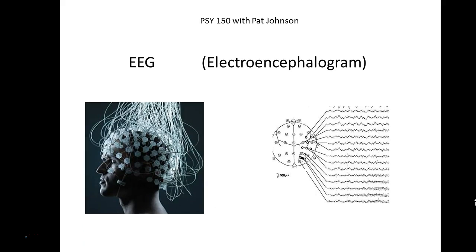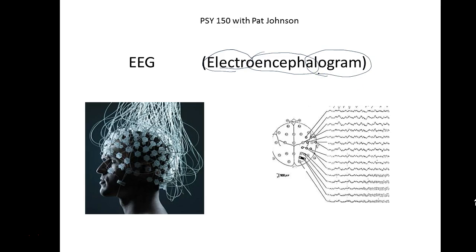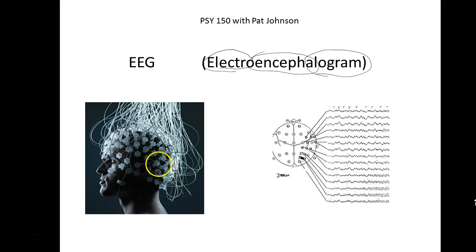The EEG stands for electroencephalogram. Electro, meaning electricity; encepha, meaning the brain; and logram, meaning a picture. So in an electroencephalogram, the person has little electrodes placed all over their brain, and they're attached with both tape and an airplane glue-type substance. Those electrodes are measuring the minute amounts of electricity that are given off by the brain.